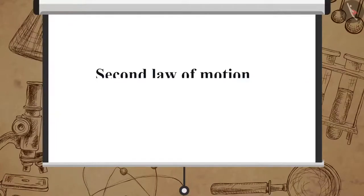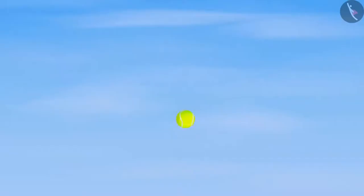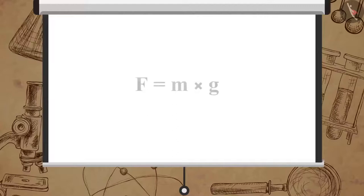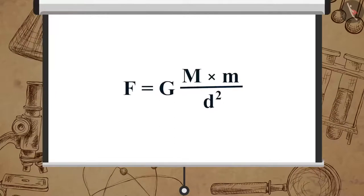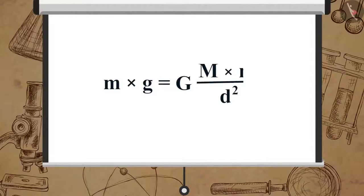From the second law of motion, force is equal to mass multiplied by acceleration. Let the mass of the ball be m. Since there is acceleration involved in a free-falling object, denoted by g, the magnitude of the gravitational force F is equal to m multiplied by g. As we learned in the previous video, F is also equal to G·M multiplied by m divided by d square. Therefore, m·g equals G·M·m divided by d square.